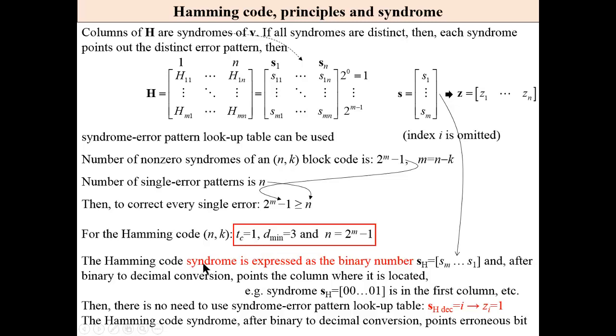The Hamming code syndrome is expressed as the binary number. Originally, syndrome is a column vector. We express this column vector as the binary number: S sub 1 is the last bit, S sub m is the left bit. And after binary to decimal conversion, this syndrome points the column where it is located. For example, syndrome all zeros and 1 is in the first column, corresponds to decimal 1 and so on. There is no need to use syndrome error pattern lookup table for Hamming code. The decimal Hamming syndrome is just number of bit that should be corrected. Hamming syndrome, after binary to decimal conversion, points erroneous bit.